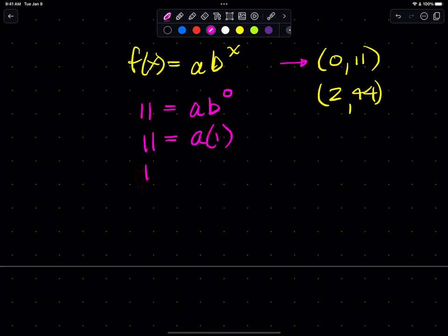And of course, 1 times a is a. And there I can determine the value for a. So now my function is as follows: f of x equals 11 times b to the x.